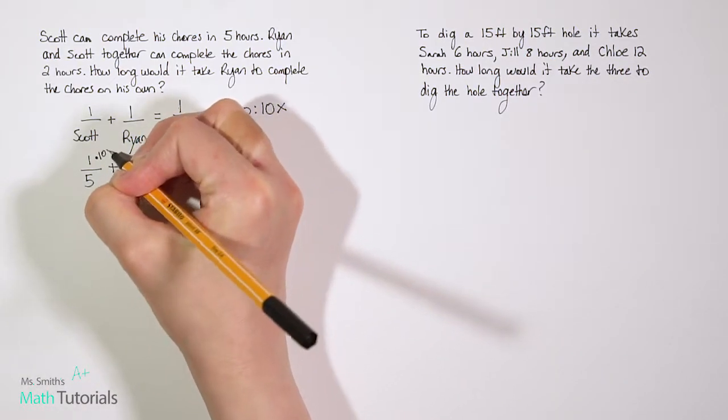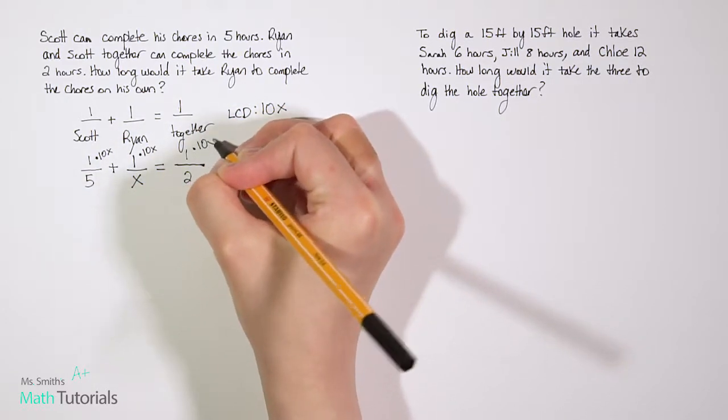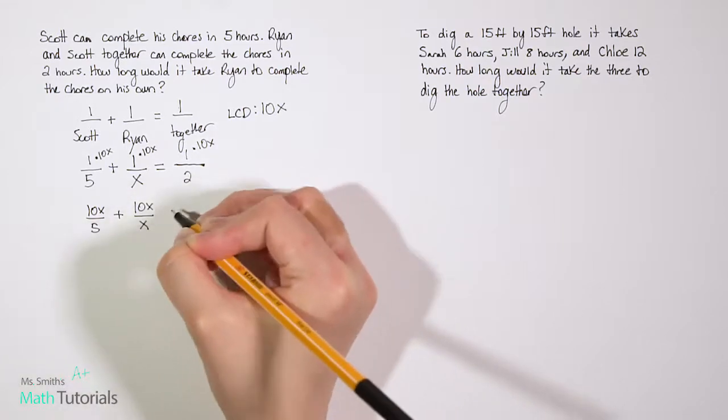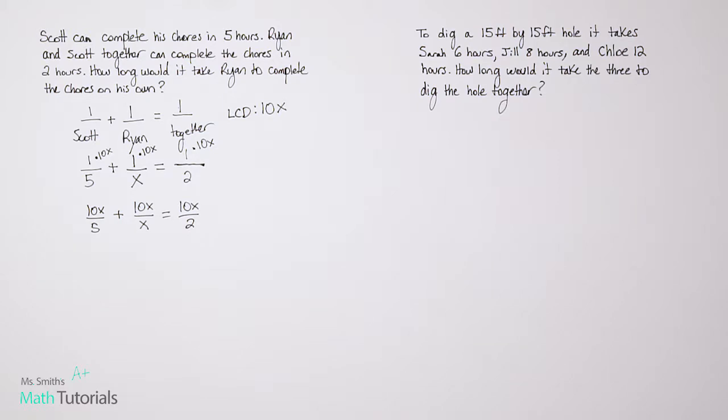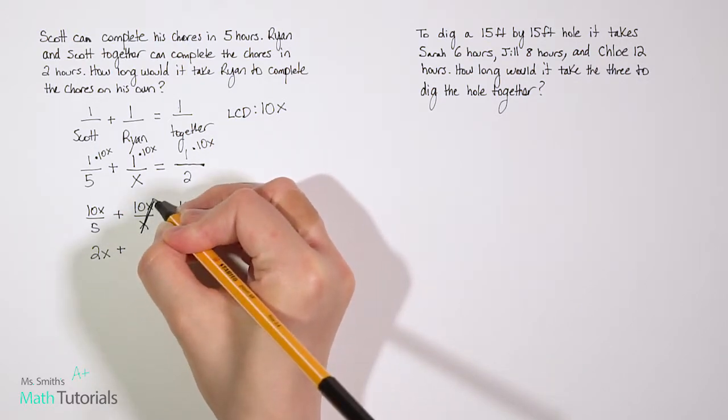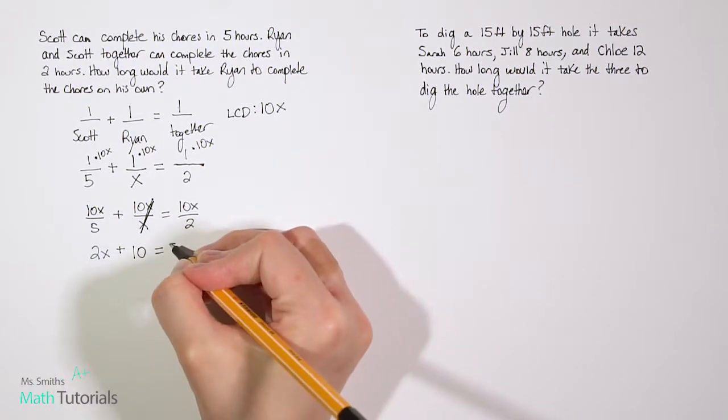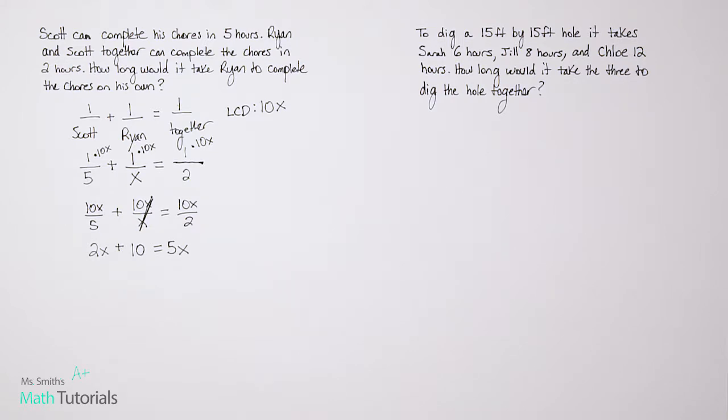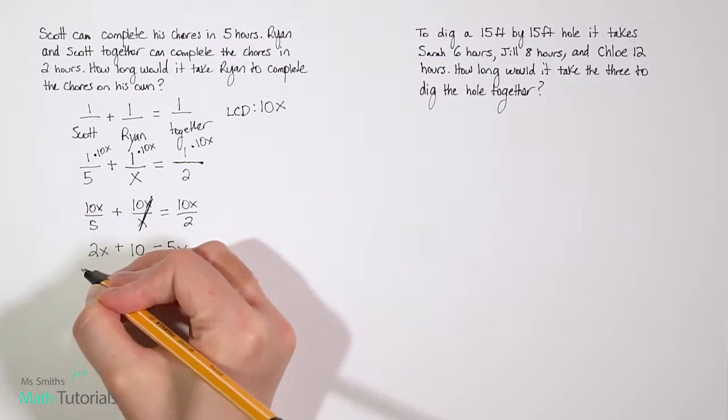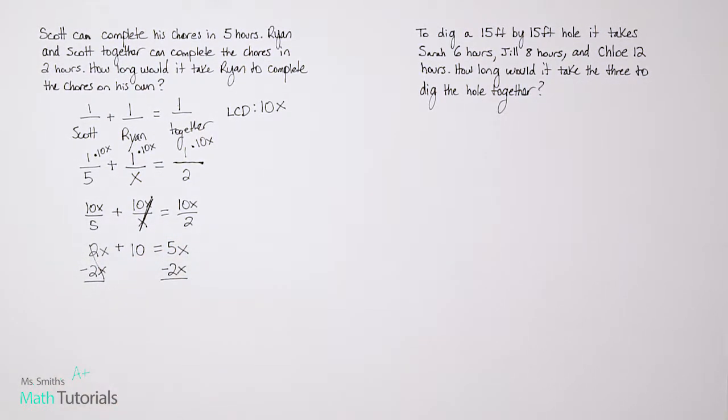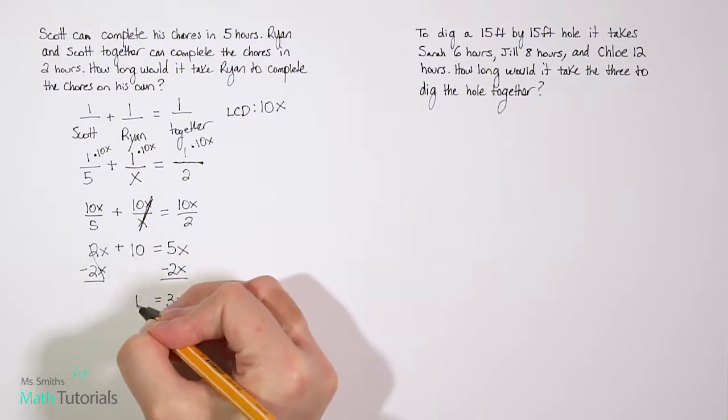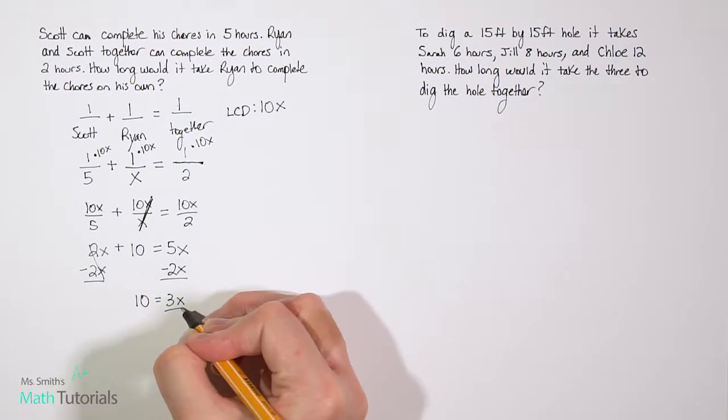We want to multiply each of the numerators by 10x. And we can rewrite this. So one times 10x is 10x over five plus 10x over x equals 10x over two. 10x divided by five is 2x plus 10x divided by x. Well, notice those would cancel, so we're just left with 10, and 10x divided by two is 5x. Now we want to solve for x. So in order to do that, I'm going to bring my lower value of x, 2x, over to the higher value, 5x, by subtracting it using our inverse operations here. We've got 5x minus 2x. Well, that's 3x, and let's bring down our 10.